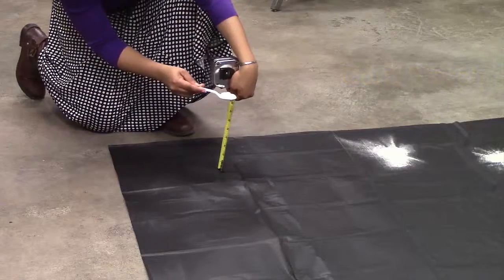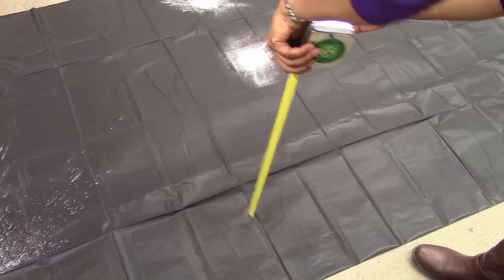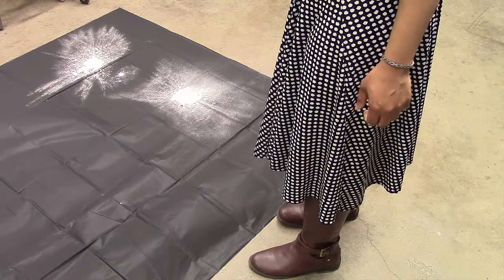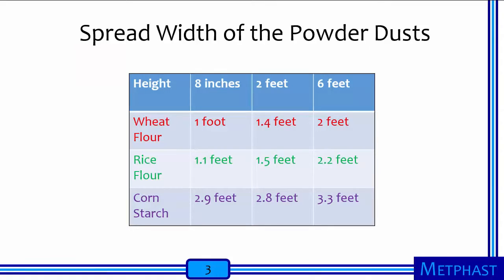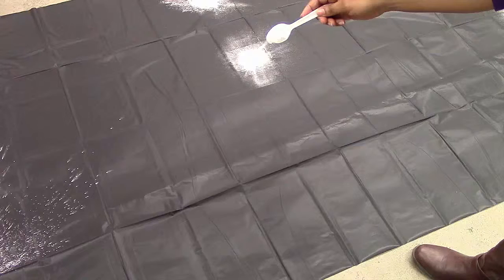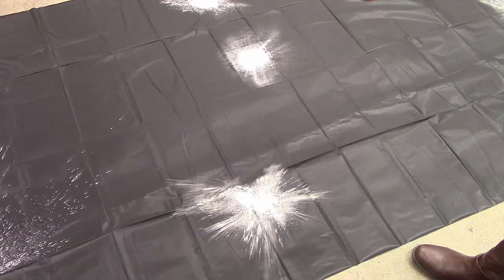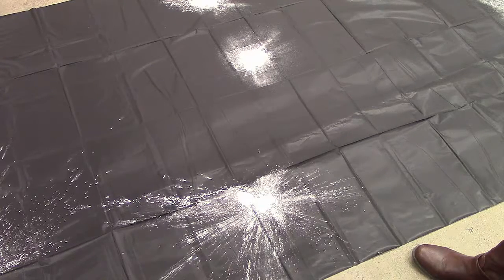And finally, measure the spread width of the corn starch powder at 8 inches, 2 feet, and at 6 feet. The measured widths of the spread are approximately 2.9, 2.8, and 3.3 feet respectively on the third row of the grid. I noticed that some of the powder particles at 2 feet crossed into an adjacent column or region on the grid, so it is likely that the 2.8 feet tape measurement is not accurate. Therefore, make sure that each region on the grid is wide enough to accommodate powder spreads and to reduce measurement errors.